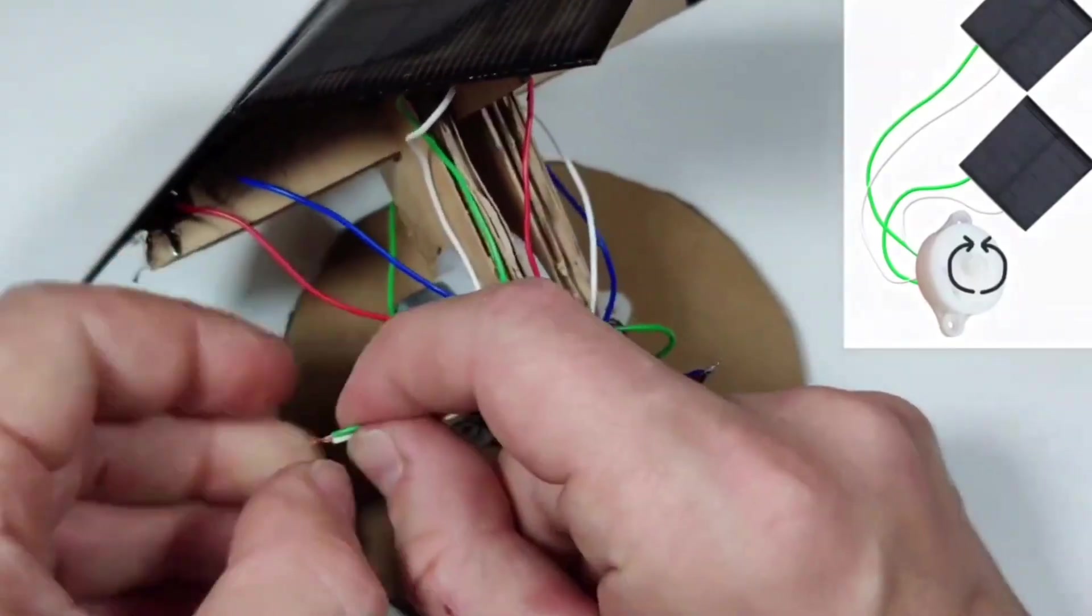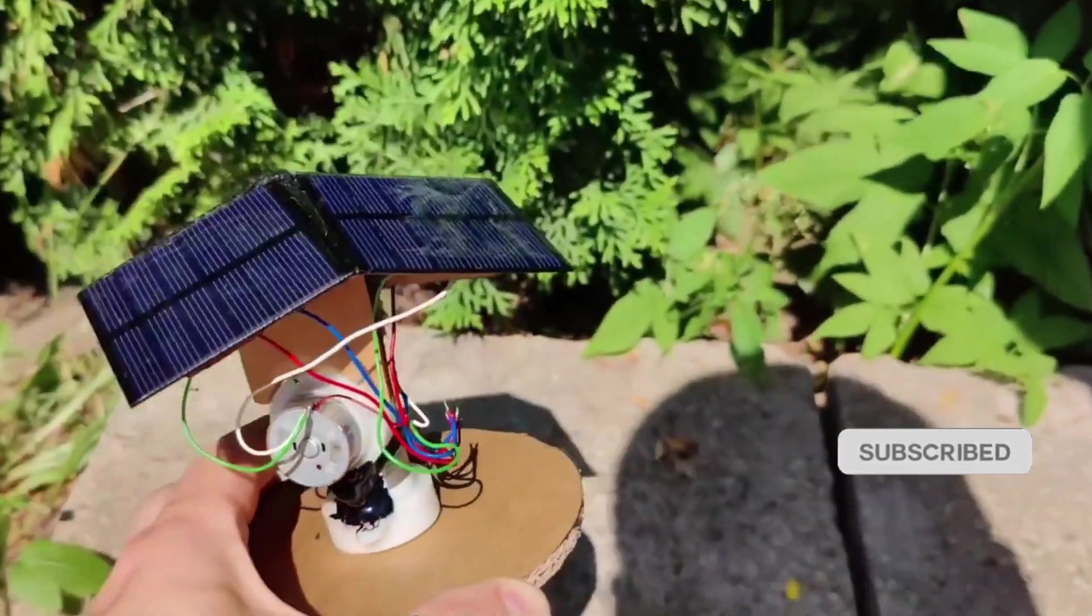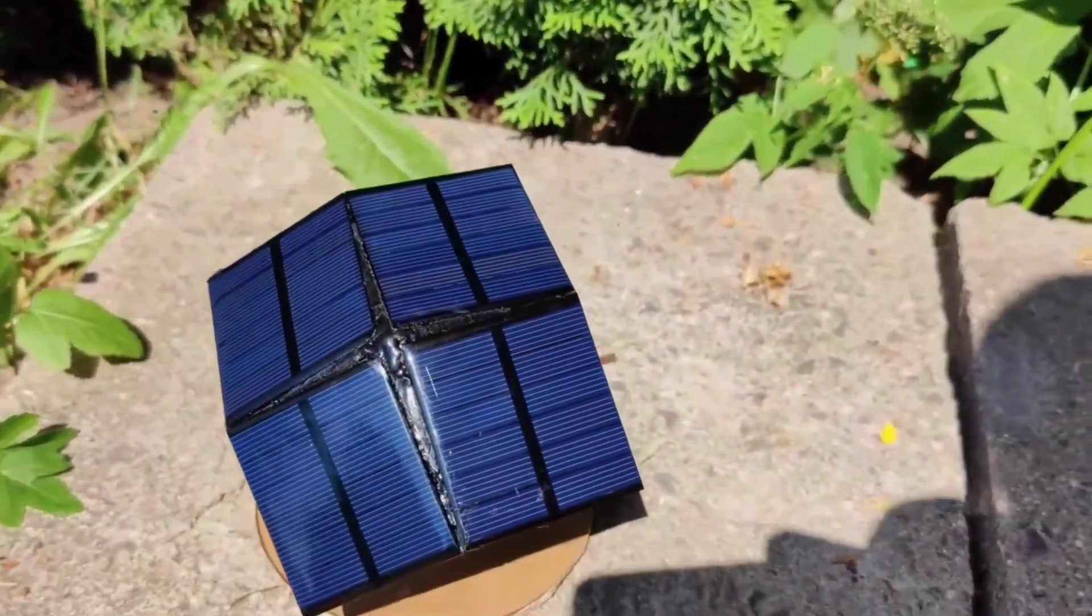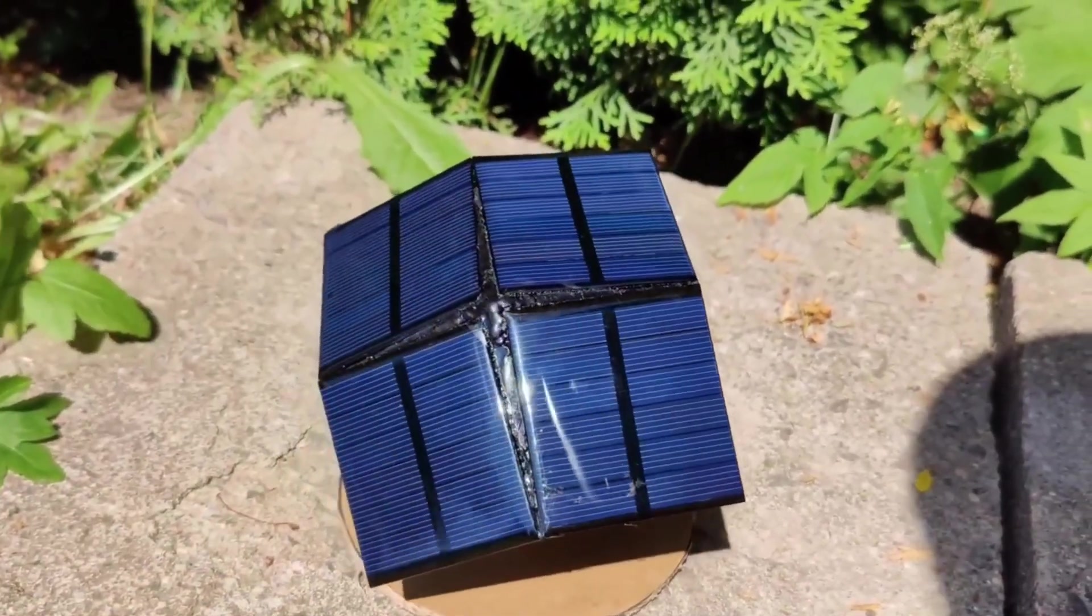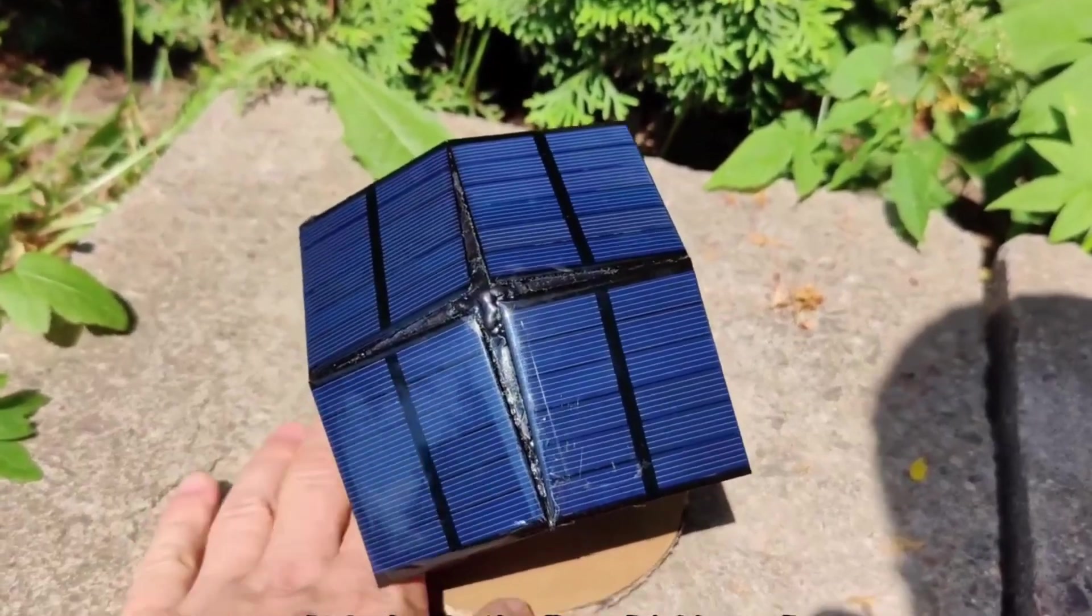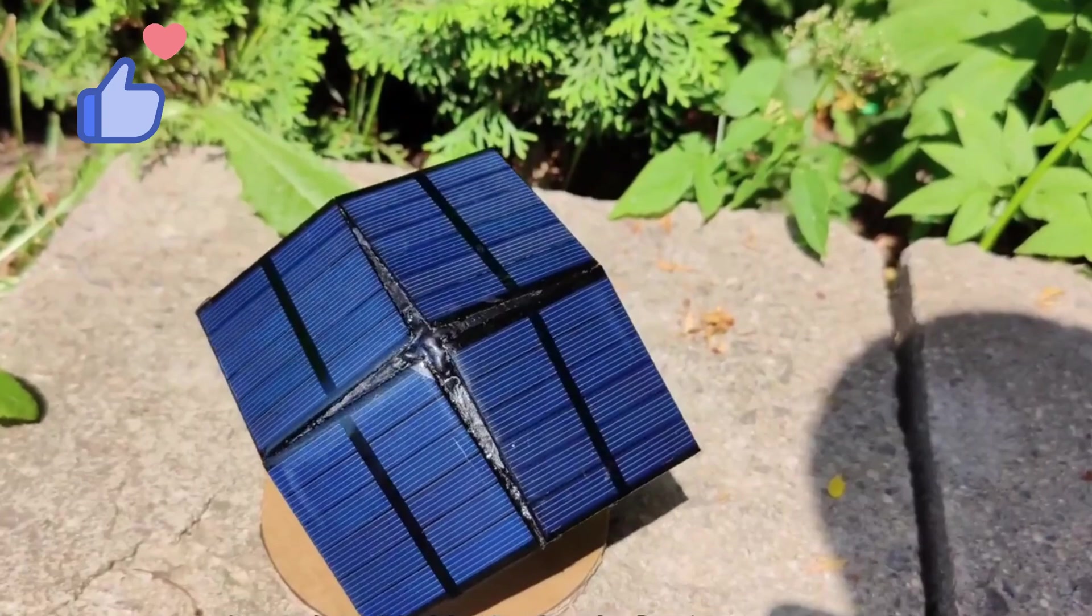Once all the wiring is complete, your simple solar tracker is ready. Take it outside on a sunny day. No matter where the sun goes in the sky, this tracker will follow it, just like a sunflower. If you want to build a bigger, more practical solar tracker, this project is a great starting point. Give it a try.